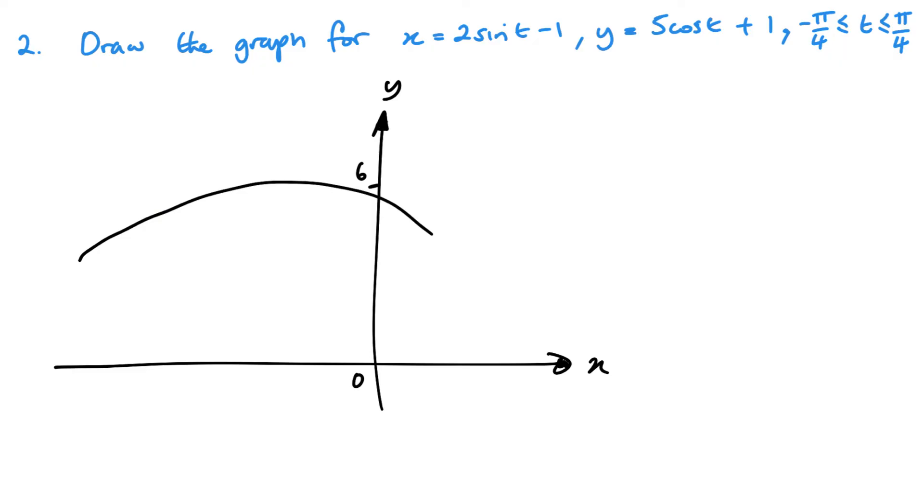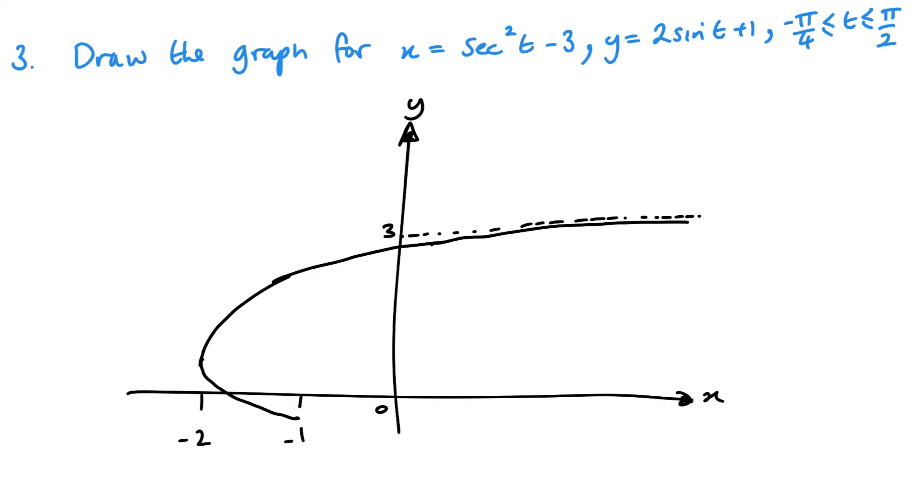So for this one, you should have a graph that looks this kind of shape. For number three, you're looking at this shape where you've got a little asymptote here where you're heading towards. Remember to follow the order in which you write your t, from smallest to biggest. Obviously you could go biggest to smallest as well and you get it going in the other direction, but it still looks the same.